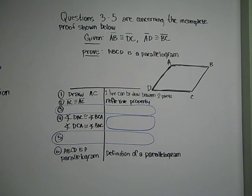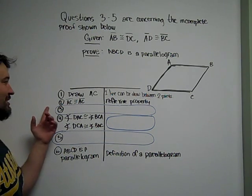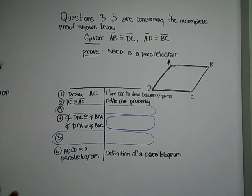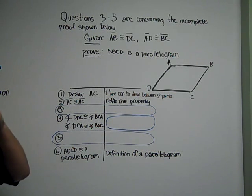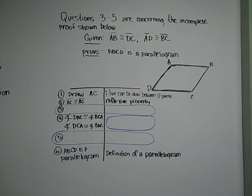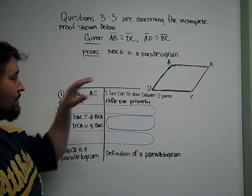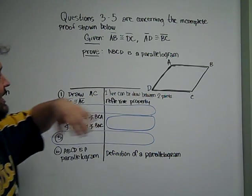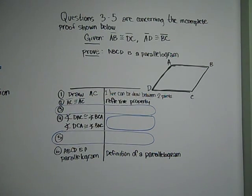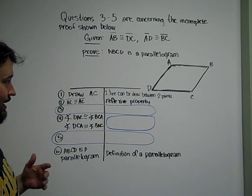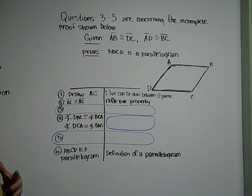One of the guaranteed concepts on your C-set is that you're going to have to fill in two or three steps of some kind of incomplete proof, such as this. There really aren't too many ideas to draw from. Looking at a parallelogram, it's one of the more likely shapes to pop up because you can draw any kind of diagonal and you get two congruent triangles.